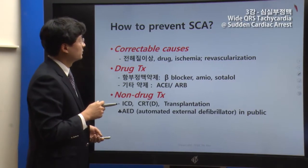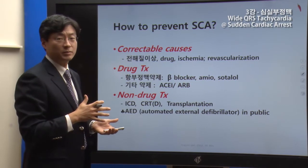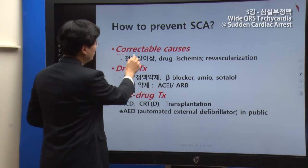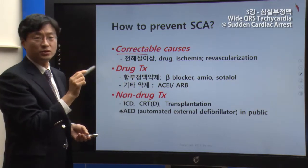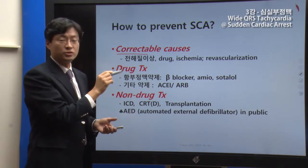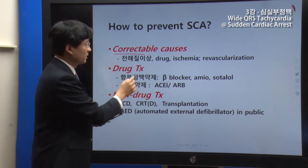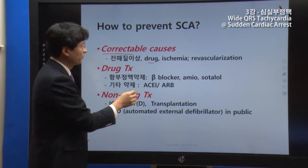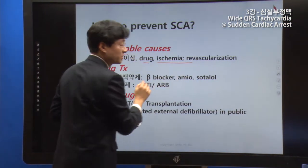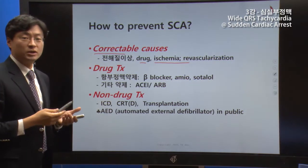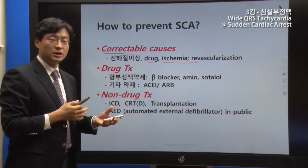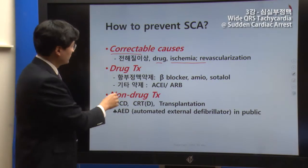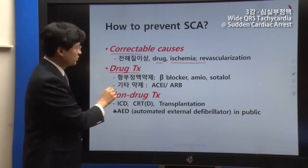To prevent sudden cardiac death, you need to correct reversible causes. For example, if there is a drug causing the problem, you need to address it. If blood pressure is abnormal — either too high or too low — you need to correct it. Drug therapy may also be used to stabilize the patient.